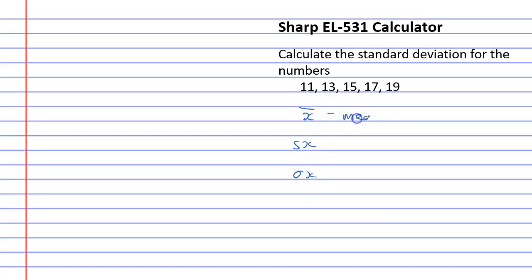X with a bar is the mean or the average. SX is the sample standard deviation. And Sigma X is your population standard deviation.